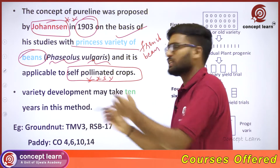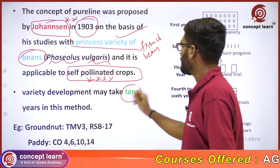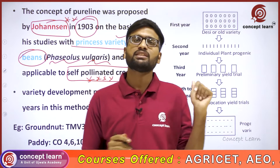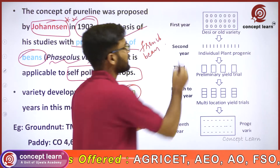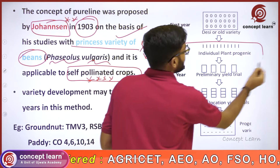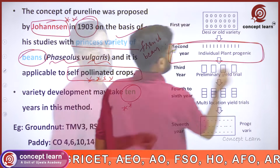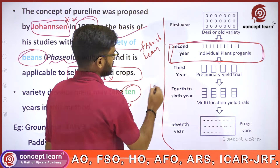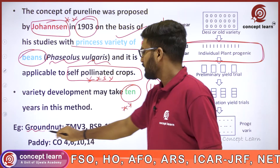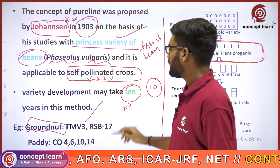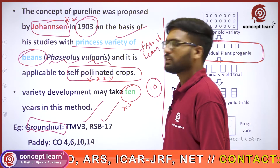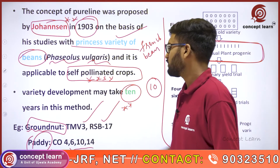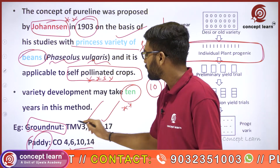Variety development through pure line selection takes 10 years, whereas mass selection takes only 8 years. Pure line selection takes longer because of the extra steps involved. Examples of pure line varieties: in groundnut, TMV3 and RSB17 varieties; in paddy, Co4, Co6, Co10, and Co14.